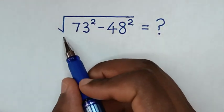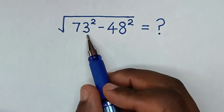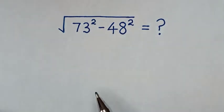Hello, how to solve square root of 73 square minus 48 square.